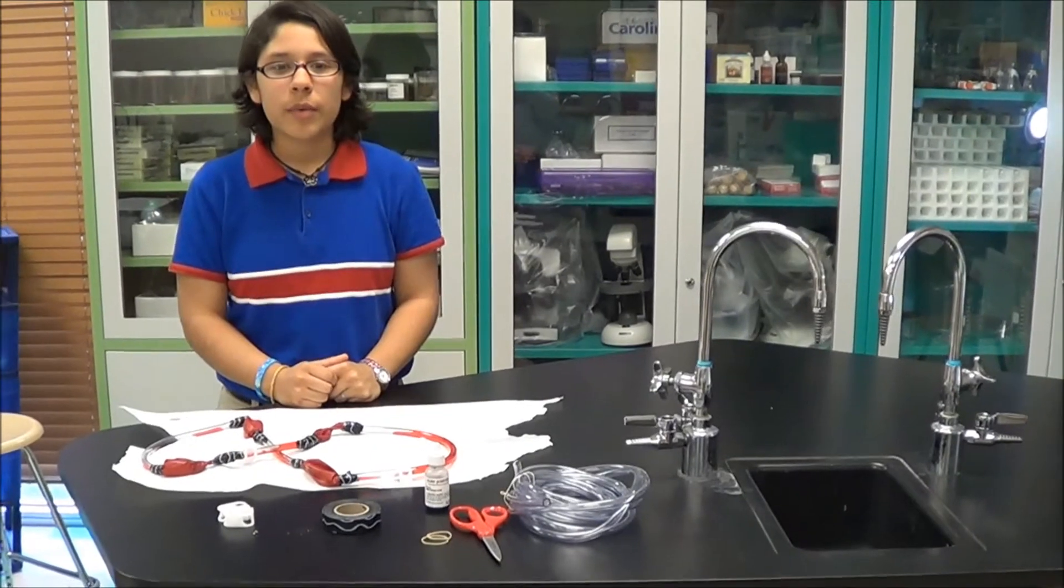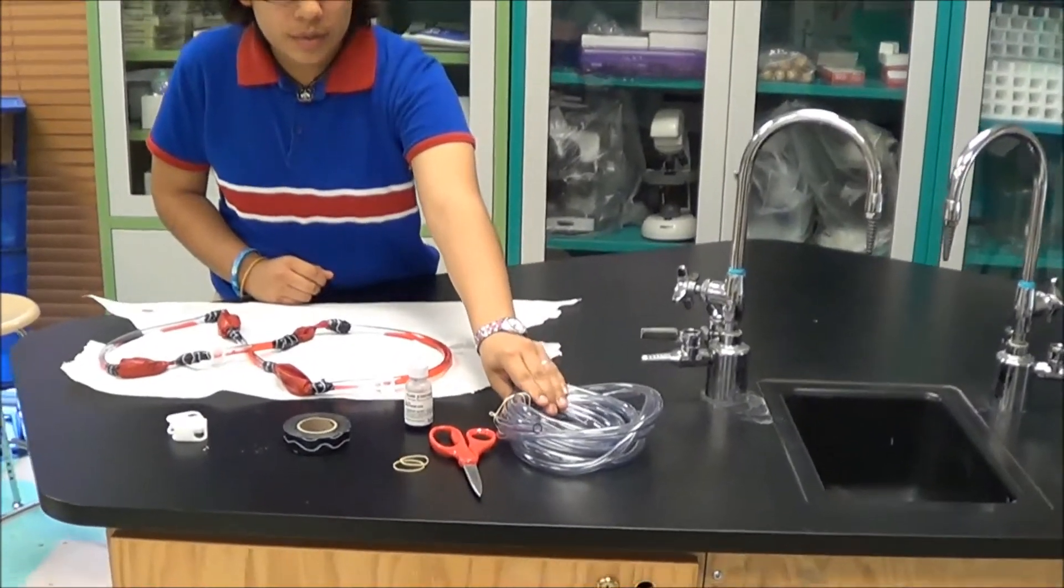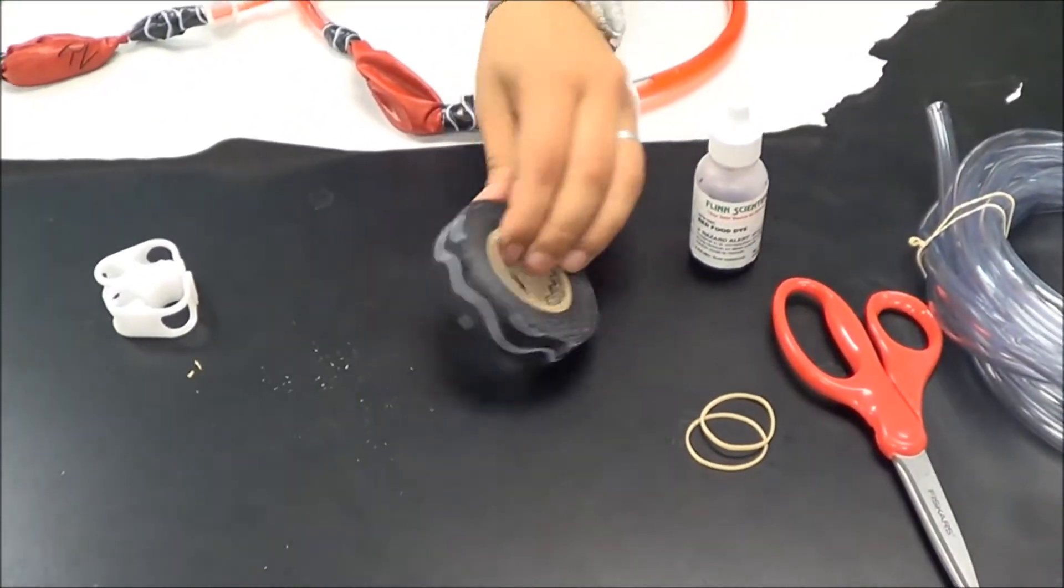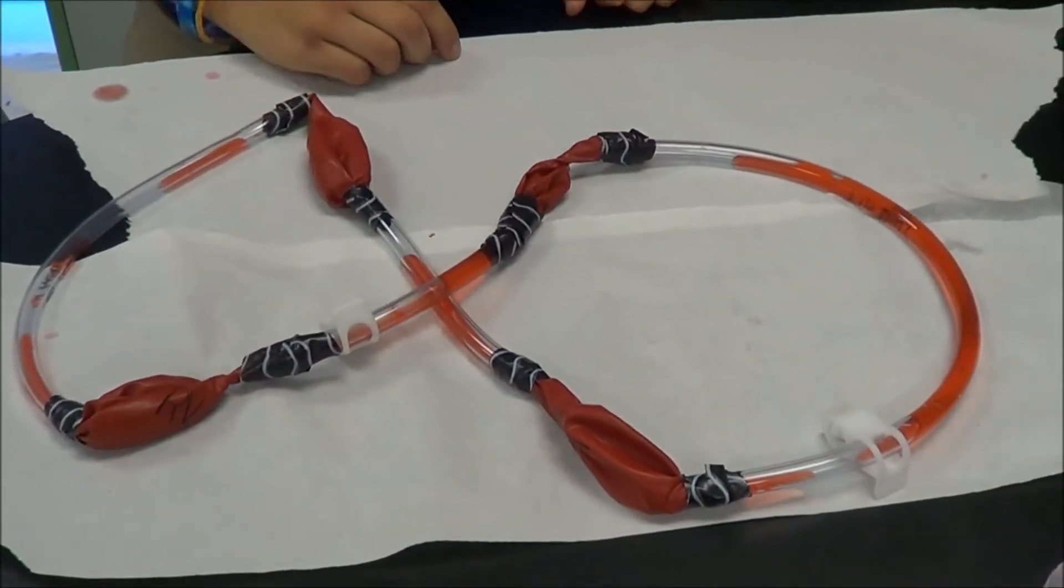Hello from Harmony Public Schools. I will be presenting a heart model. My materials are plastic tubing, scissors, a few rubber bands, food coloring, electrical tape, and a few clamps. What I am representing is how the heart works with the lungs.